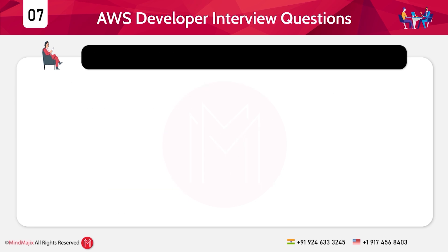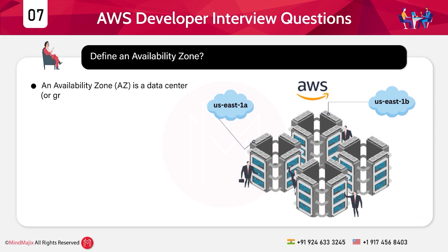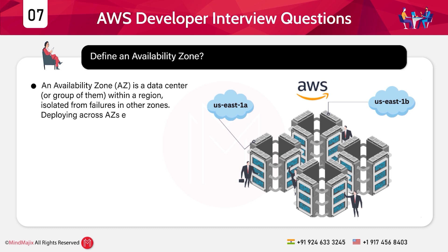Question 7: Define an Availability Zone. Answer: An Availability Zone, or AZ, is a data center or group of data centers within a region, isolated from failures in other zones. Deploying across AZs ensures high availability and fault tolerance for applications.